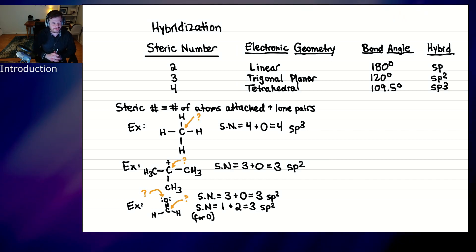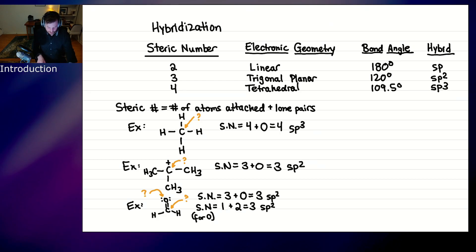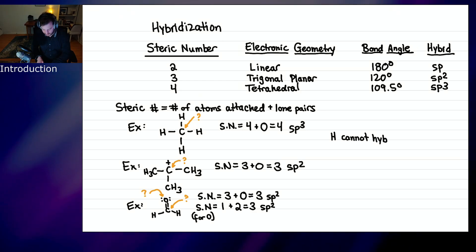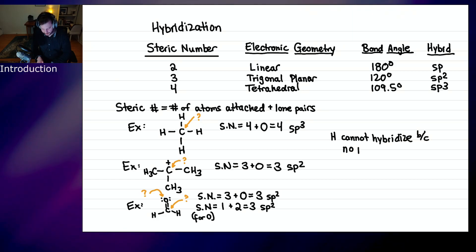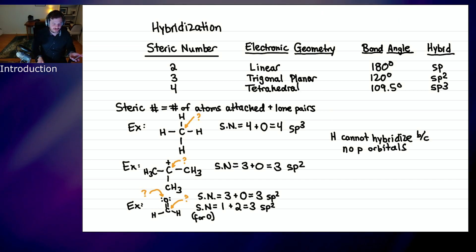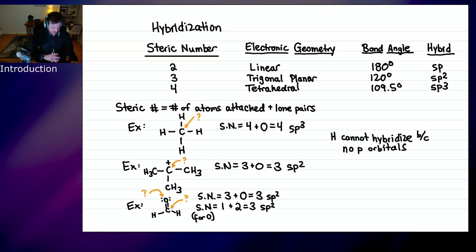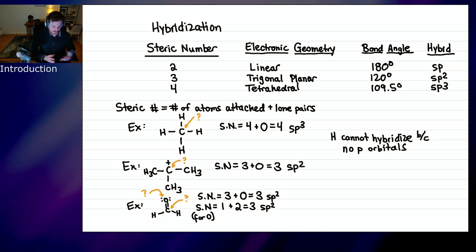An important note: hydrogen cannot hybridize because it has no p orbitals. So if I ask you what's the hybridization of hydrogen, that's a nonsense question. It doesn't make any sense because hydrogen only has s orbitals — there is no hybridization for hydrogen.